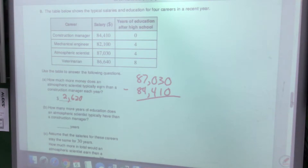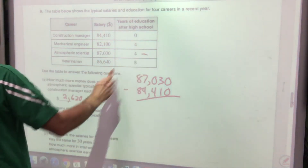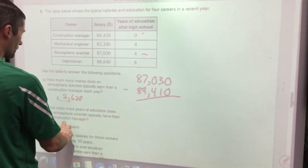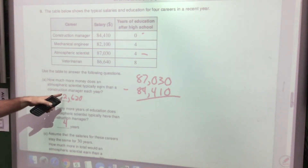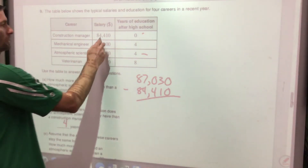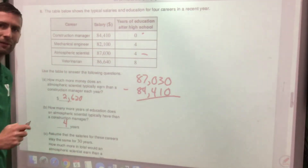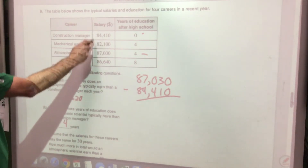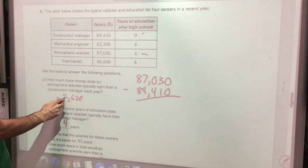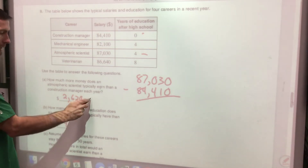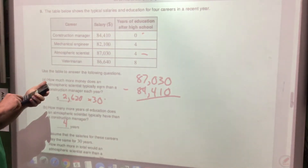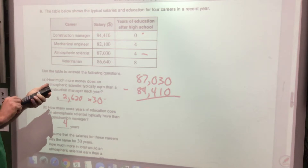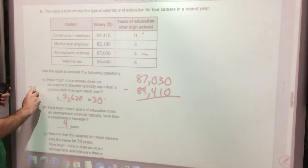How many more years of education does an atmospheric scientist have than a construction manager? Four more years of school. Assuming salaries stay the same for 30 years, how much more would the atmospheric scientist earn total? Since it's $2,620 more per year, multiply by 30: $2,620 × 30 = $78,600 over 30 years.